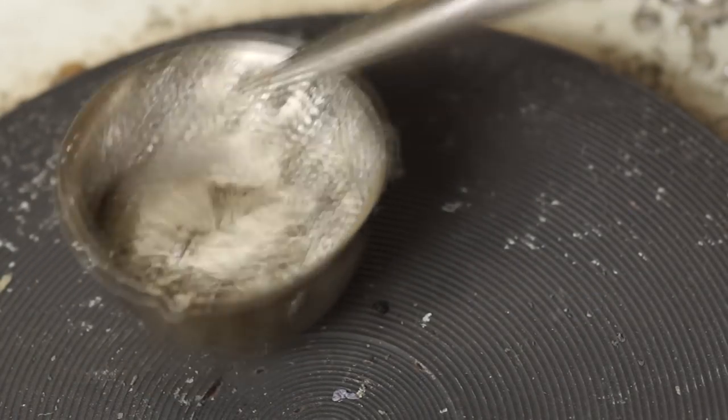Just before pouring I can skim off the dross and then gripping the egg cup with a pair of pliers I can pour the mold.